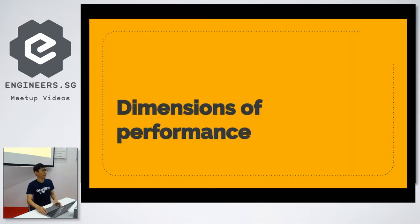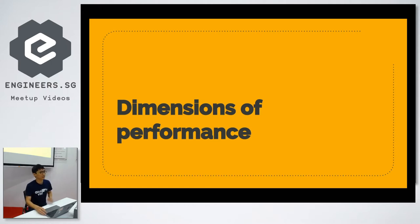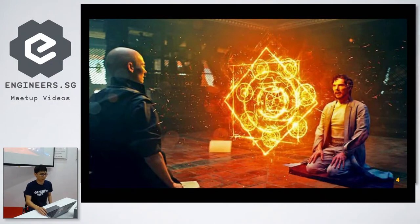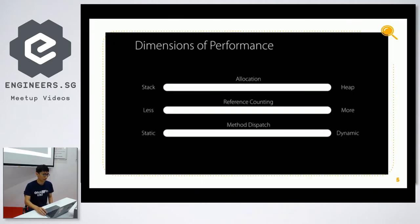On the first topic, dimensions of performance. When you hear 'dimensions of performance,' it might consist of many multiple things to consider. But actually, for performance, there are only three key dimensions to consider: allocation, reference counting, and method dispatch.